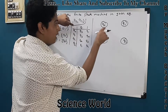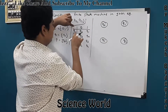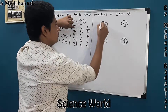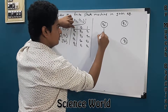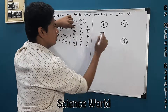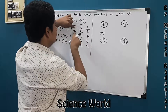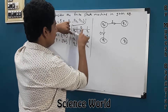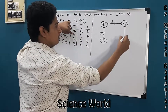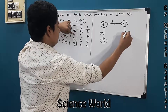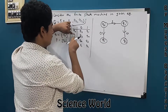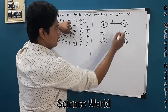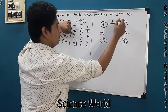Now using the table we draw the transitions. Q0 on input 0 goes to Q2. Q0 on input 1 goes to Q1. Q1 on input 0 goes to Q3. Q1 on input 1 goes to Q0.